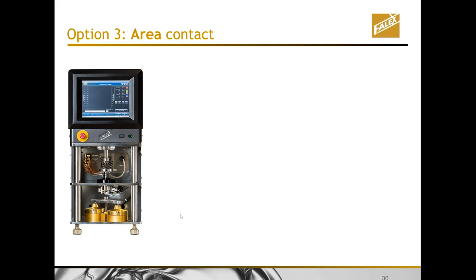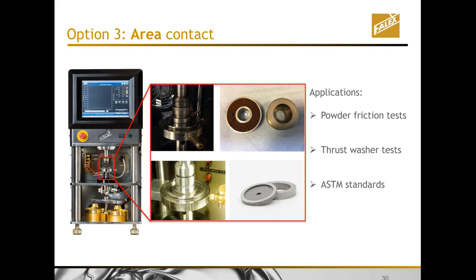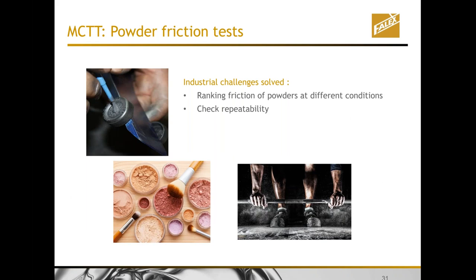The third category is area contacts, which are interesting because as you increase the area, you further decrease the contact pressure in a lab test. There are many industrial situations with moderate contact pressures. I will illustrate with two examples: a powder friction test and an area contact test. For powder friction — why did we look at powder friction? Because powders sometimes need a lubricating quality by themselves, and in some cases you actually want the friction to be quite high.